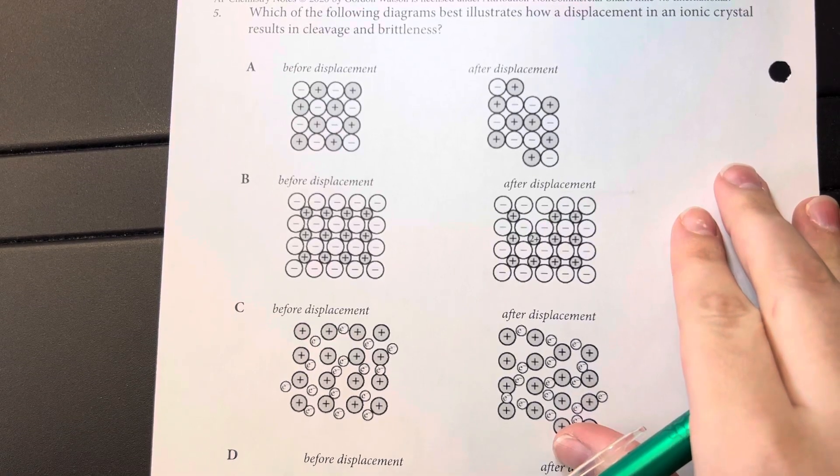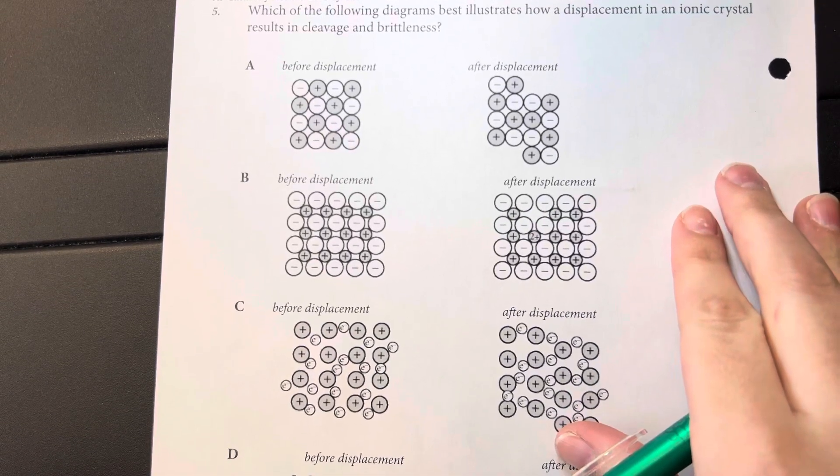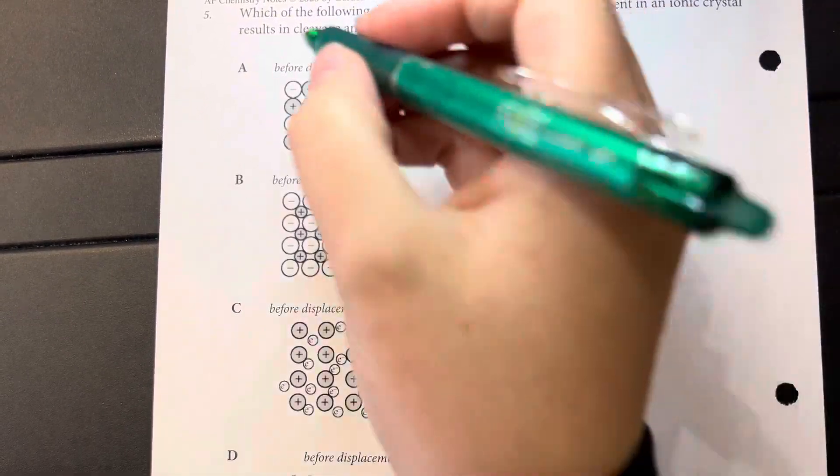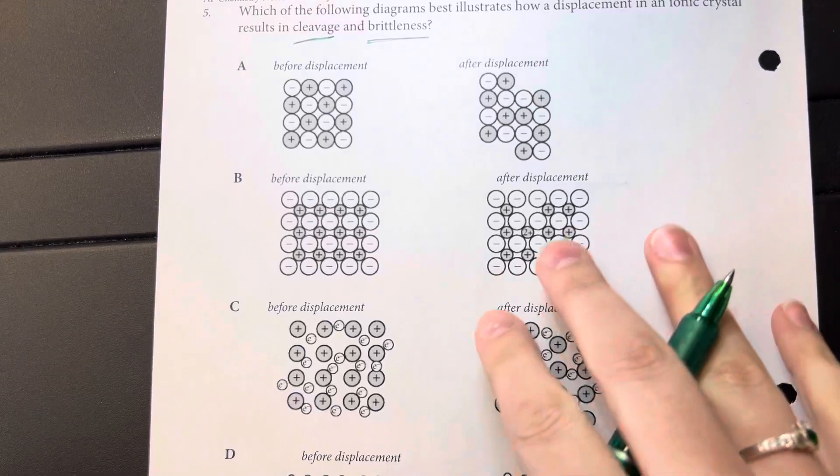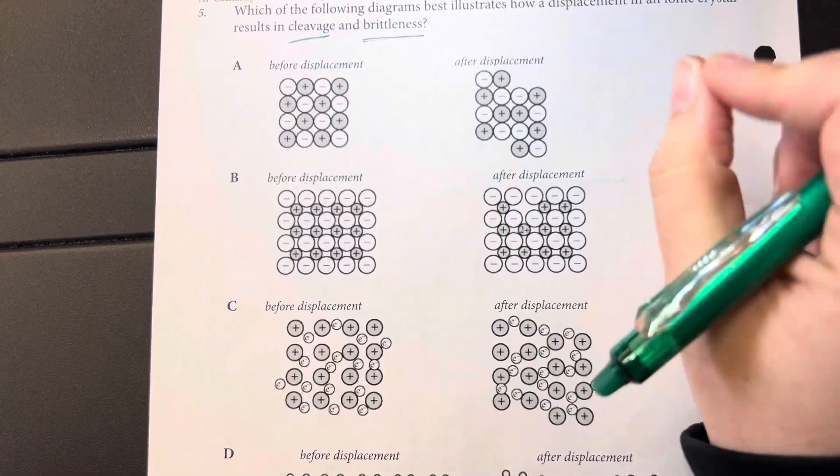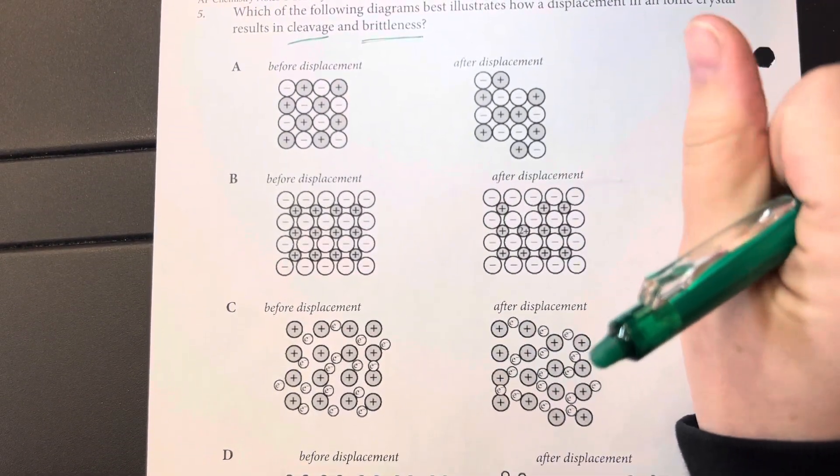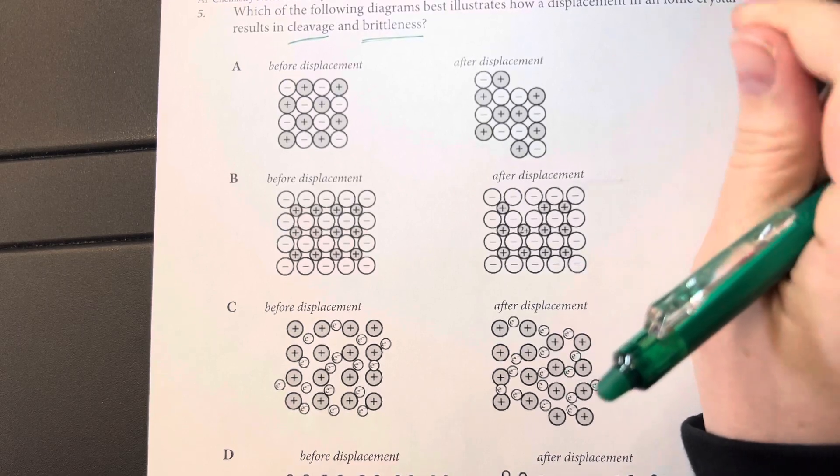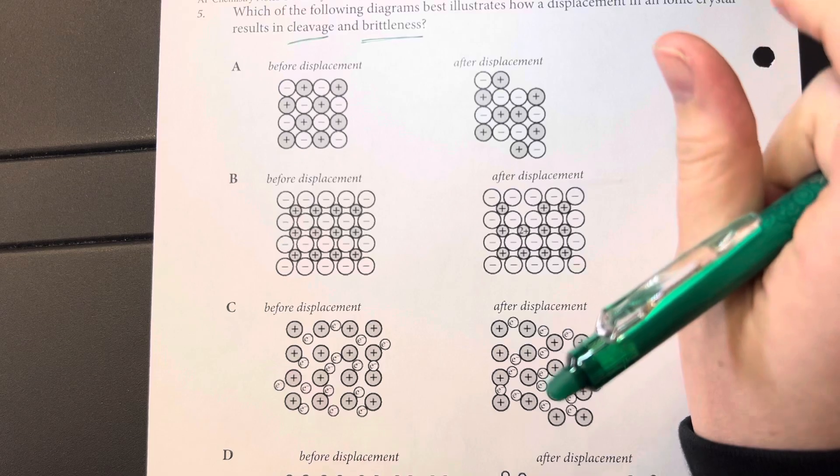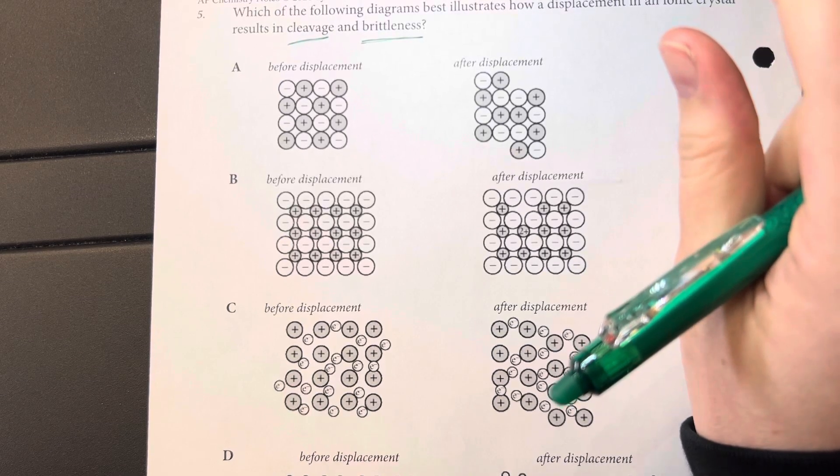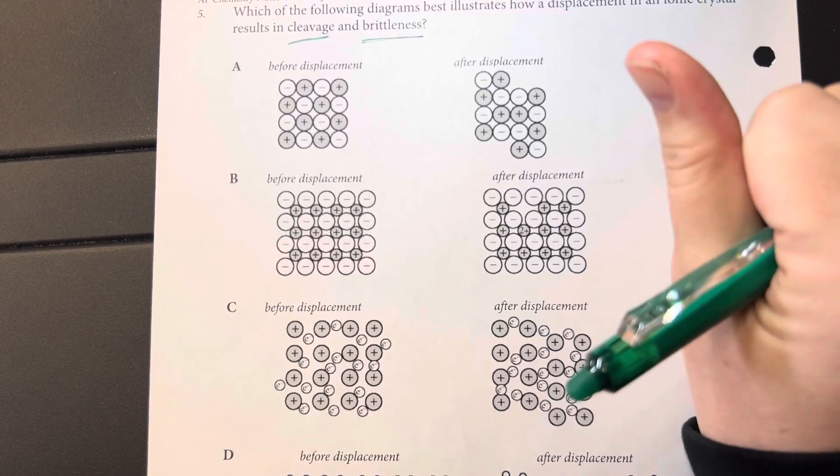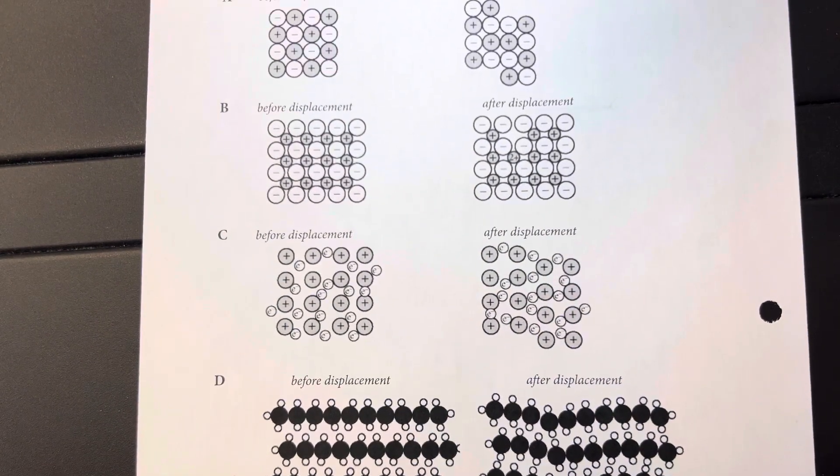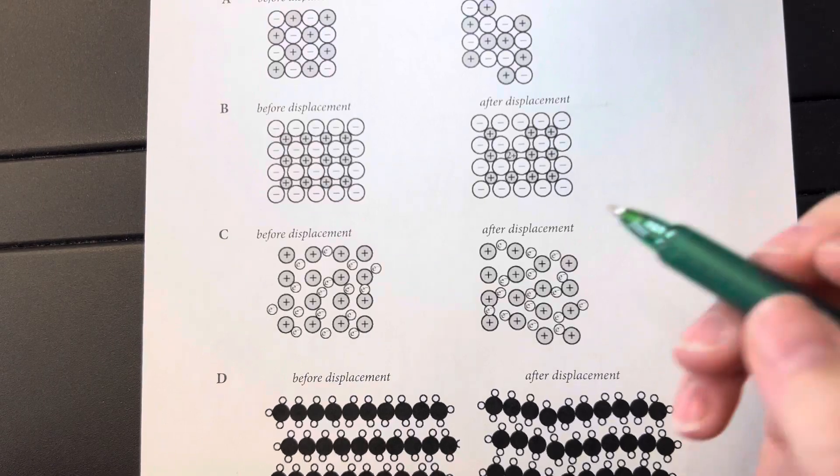Which of the following diagrams best illustrates how a displacement in an ionic crystal results in cleavage and brittleness? This means that they are going to break apart, and I'm going to have a separation between my things in a nice, solid set differential there. So we have a couple of things here, a couple of representations. First off, I have really just two representations of ionic compounds in the first place.